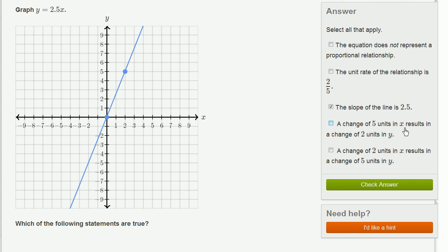A change of 5 units in x results in a change of 2 units in y. Well, let's test that idea. We know when x is 0, y is 0. So if x goes from 0 to 5, what's going to happen to y? Well, y is going to be 2.5 times 5, which is 2.5 times 5 is 12.5. So y would not just change 2. It actually would change 12.5. So this isn't right.